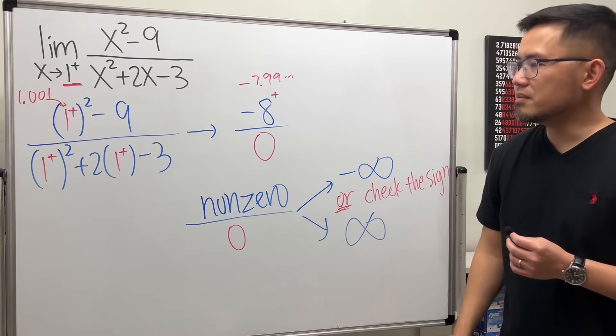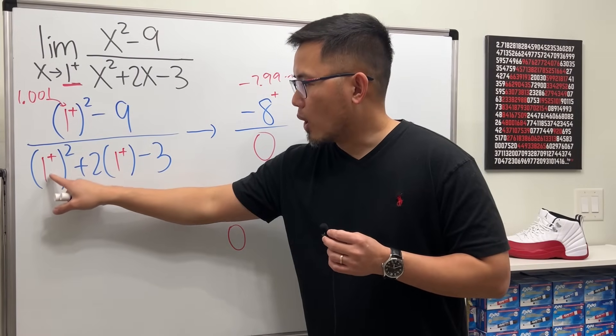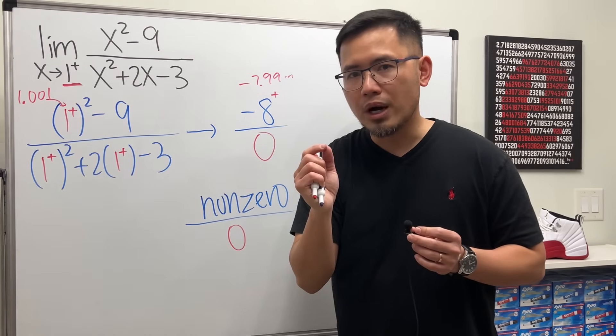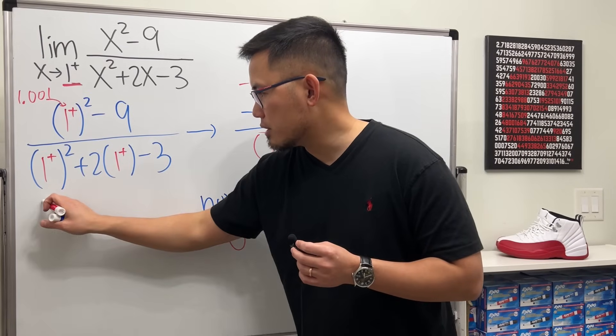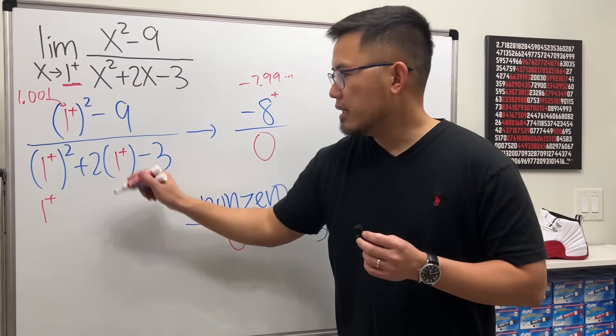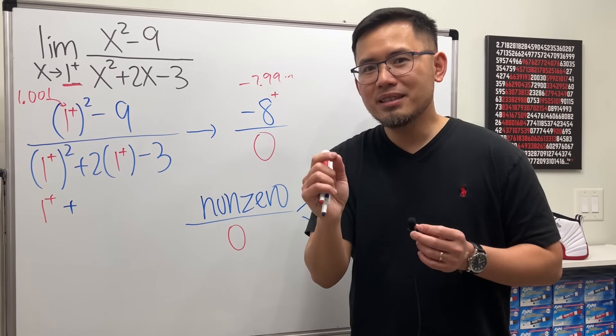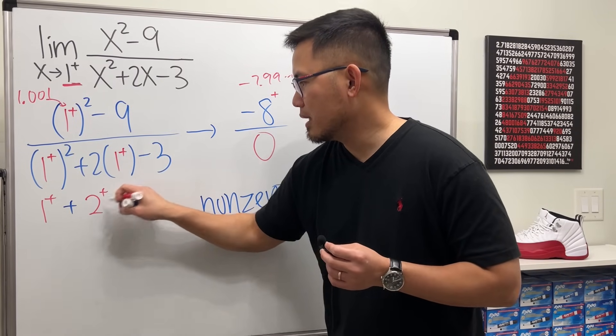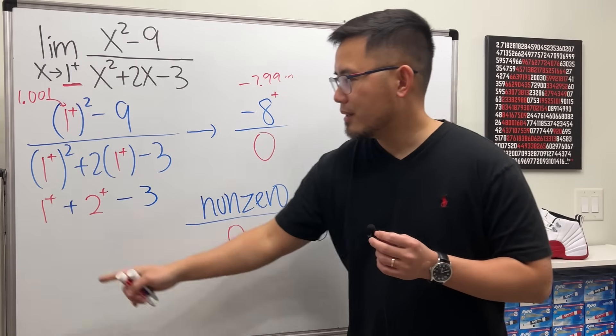Now the bottom is the key. Here we go: 1 plus squared. When we square a number that's a little bit bigger than 1, the result will still be just a little bit bigger than 1, so this right here is 1 plus. And then we add 2 times the number that's a little bit bigger than 1, it's a little bit bigger than 2, so this is 2 plus. And after that we have the minus 3.